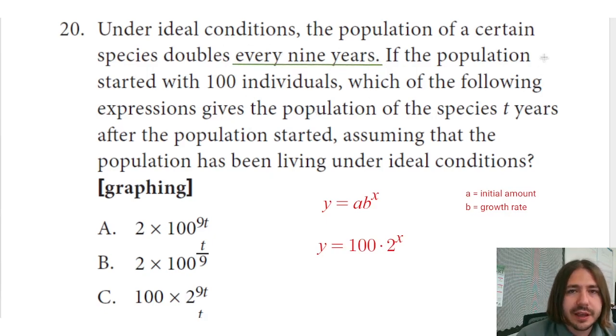So in order for it to double every nine years, we need to divide this x by 9, so that we basically are going to do one-ninth of the doubling each year. So if we double over the course of nine years, divide that up into each individual year—if we do like one-ninth of that doubling per year.